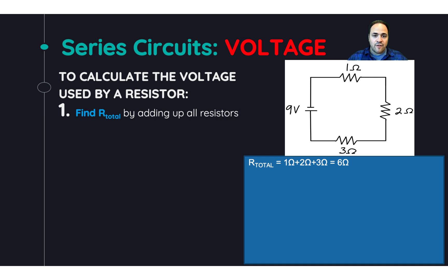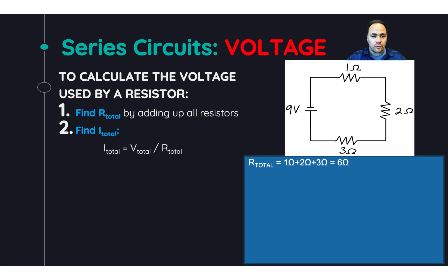Next, find the total current running through the entire circuit. In a series circuit, the current is the same no matter where you check. To find it, we use Ohm's law, rearranged to solve for current. We take the total voltage supplied by the battery — nine volts — and divide by the total resistance we just found. Nine volts divided by six ohms gives us 1.5 amps.